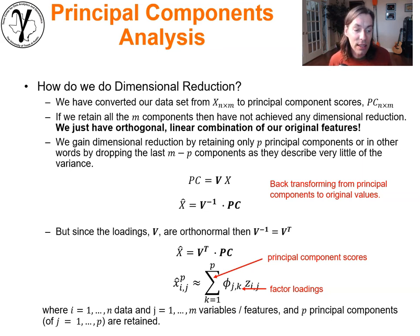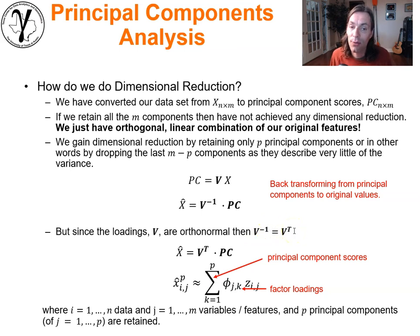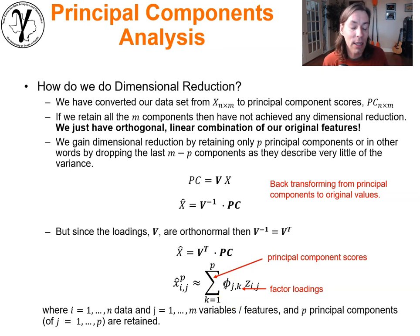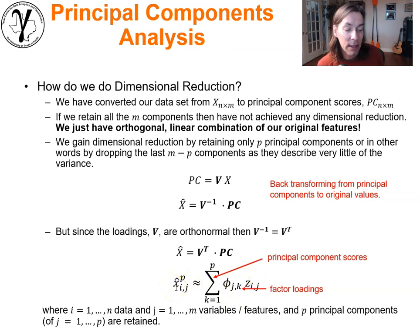Since the V matrix is orthonormal, in matrix math the inverse equals the transpose. So we simply apply the transpose of the component loadings to the principal components to get the projection back. We take the principal component scores and apply the loadings again — all we do to achieve dimensionality reduction is stop the summation at p instead of m, zeroing out the m minus p components.